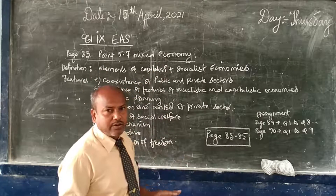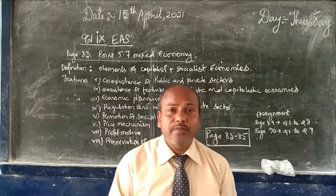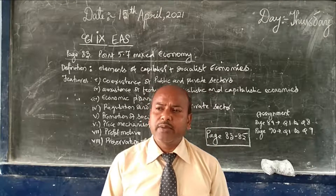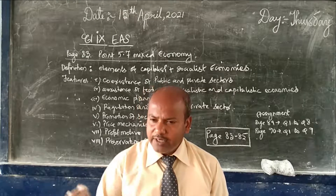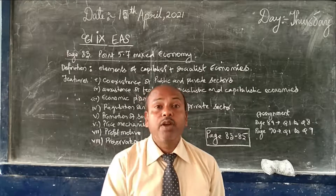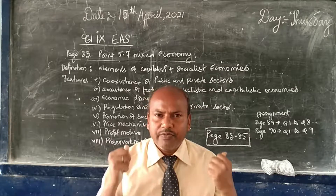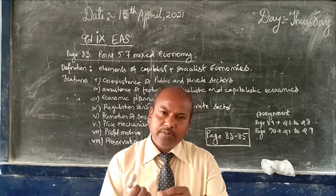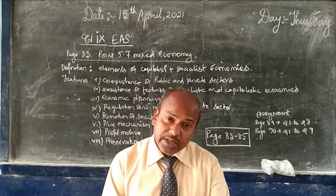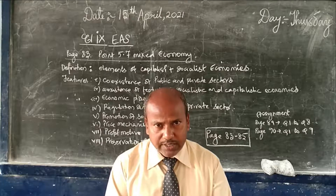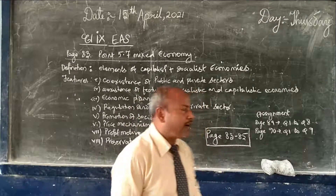In a mixed economy you find both the features and elements of capitalism as well as socialism. You find the private sector as well as the public sector — when we say public, it means belonging to the government. In the capitalistic economy you find only the private sector; in the socialistic economy you find only the public sector. In the mixed economy you find both, and when private and government work together for the development of an economy, we call it a mixed economy.